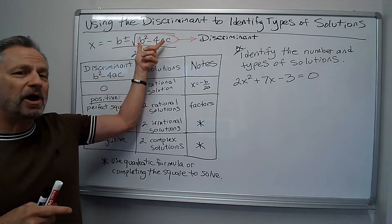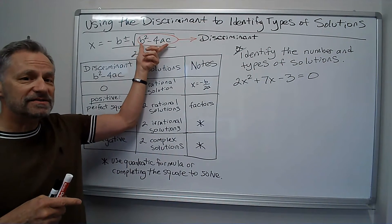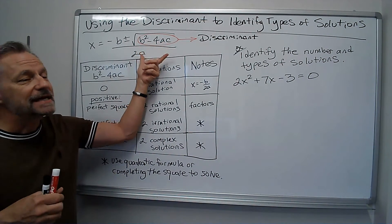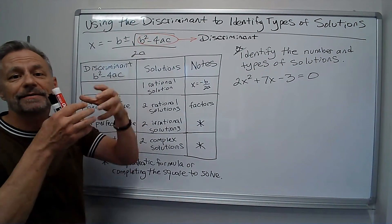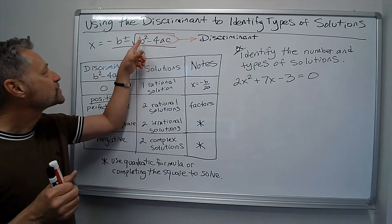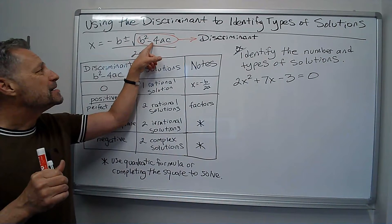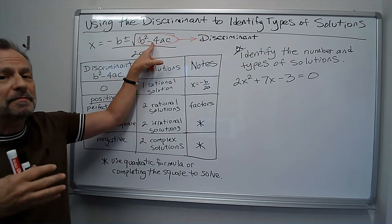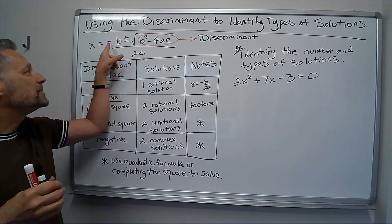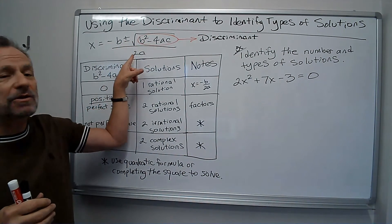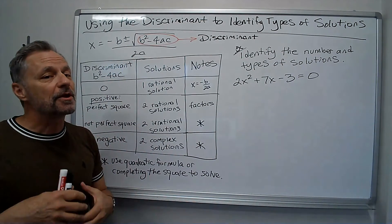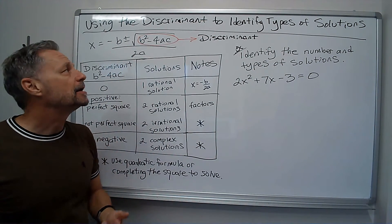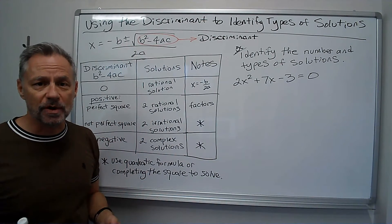Now suppose that's positive. If that's a positive number, there's one of two things. Either it's a perfect square. If it's a perfect square, I'm going to take the square root and I'll get a number. But that number is going to be some whole number. Now I've got -b plus or minus that whole number over 2a. I'm going to end up with two answers.